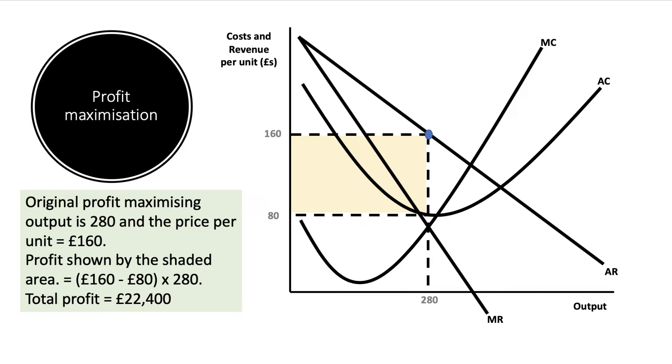Here's our initial example: a firm with a downward sloping demand curve. The original profit maximizing output is 280 units - that's where marginal cost meets marginal revenue. We can sell those units for 160 pounds per unit. The average cost is assumed to be 80 pounds, so we're making a 100% markup on cost.